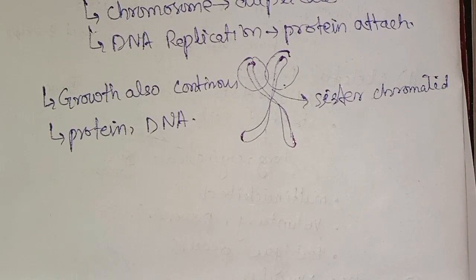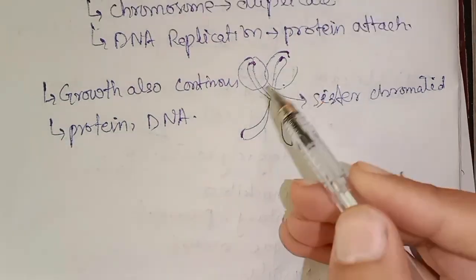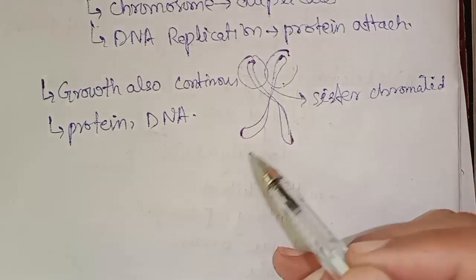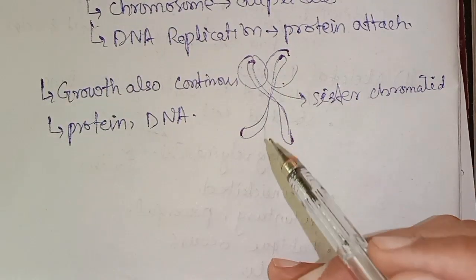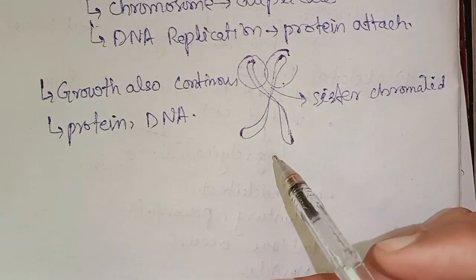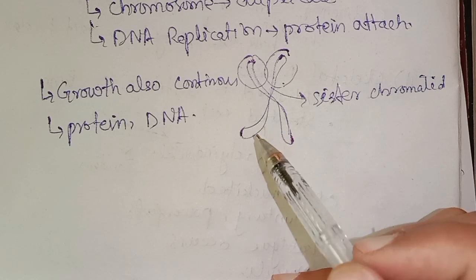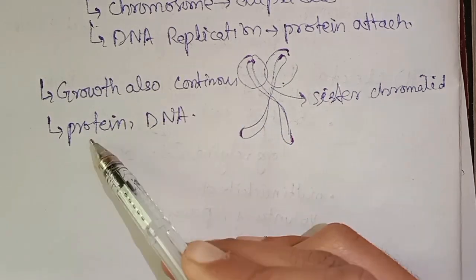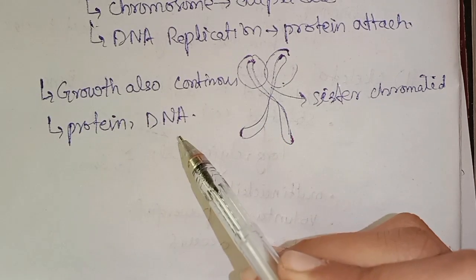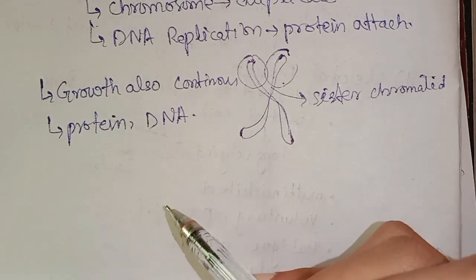To summarize the S phase: chromosomes are duplicated via DNA replication, proteins are synthesized, and chromosomes now consist of sister chromatids. Cell growth and protein and DNA synthesis continue.